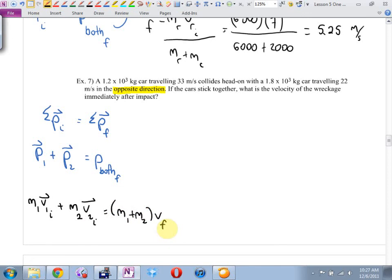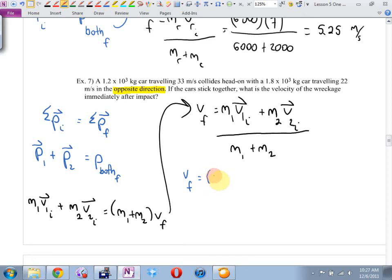Momentum is what times what? Mass of car one, velocity of car one initial plus mass of car two, velocity of car two initial equals mass one plus mass two, v final. Is that okay, Kara? If I want to find v final, it looks like v final is going to be the mass of car one, its initial velocity, plus mass of car two, its initial velocity, divided by the mass of both cars. Here we go.